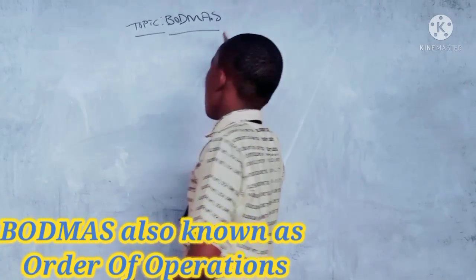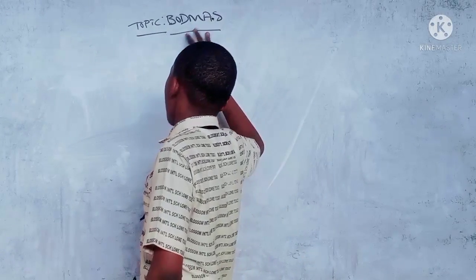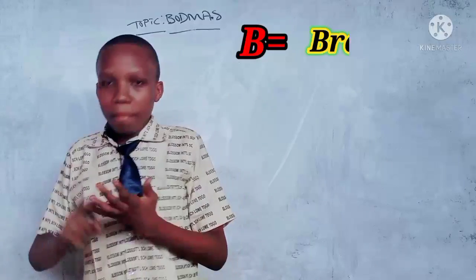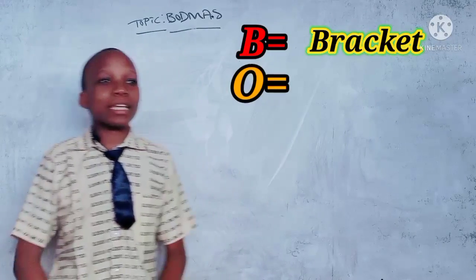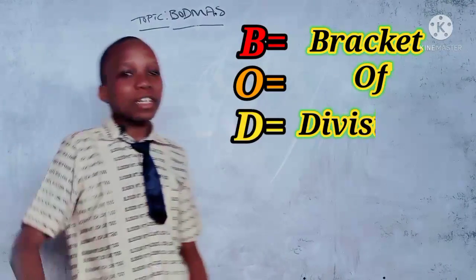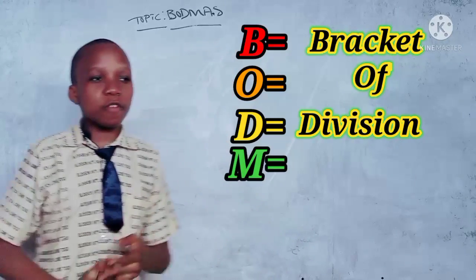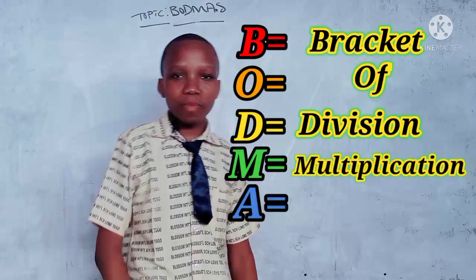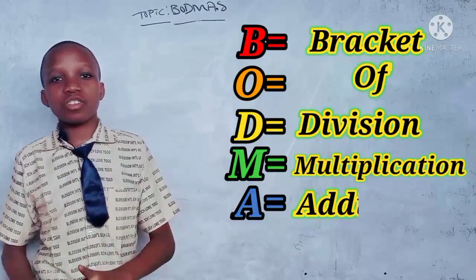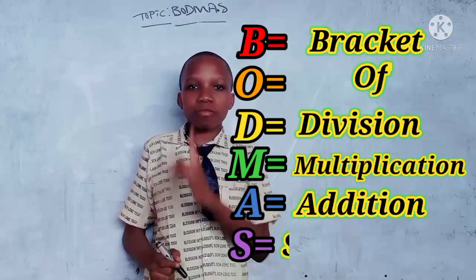BODMAS stands for - B stands for bracket, O stands for of, D stands for division, M stands for multiplication, A stands for addition, and S stands for subtraction.